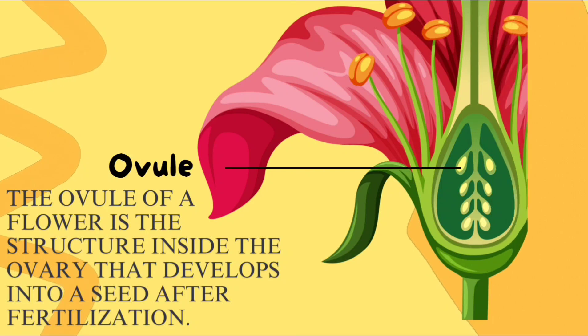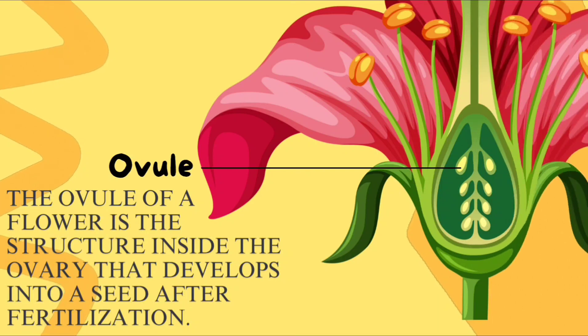This part of a flower is called ovule. The ovule of a flower is the structure inside the ovary that develops into a seed after fertilization.